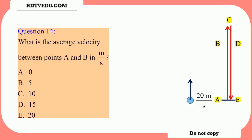Question number 14 is: what is the average velocity between points A and B in meters per second? Remember, it was thrown or kicked vertically up at positive 20 meters per second. It's positive because on the way up it is positive — we chose positive Y as vertically up.